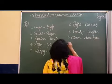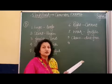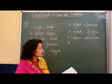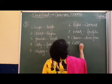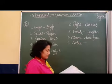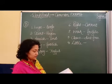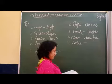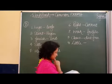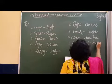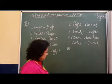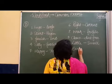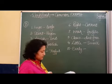Children, you need to find out the words given in your book. All words are given together; you need to find out the pair of that word. Number 9, we are given: little. For little, we are given: small. And ten, we are given: early. You can write: timely.